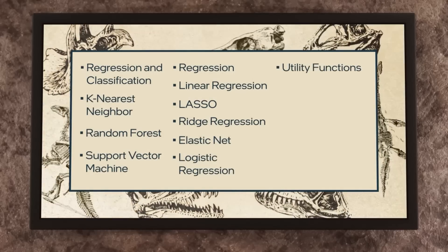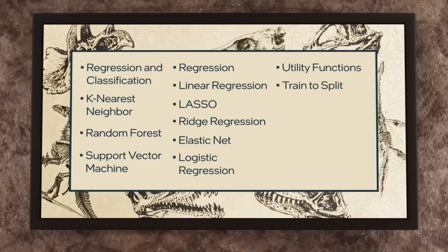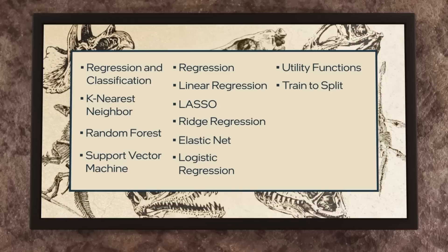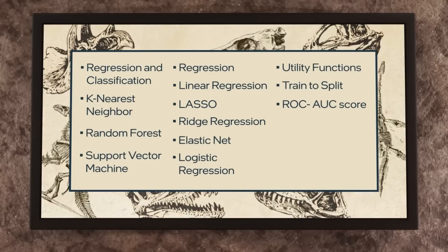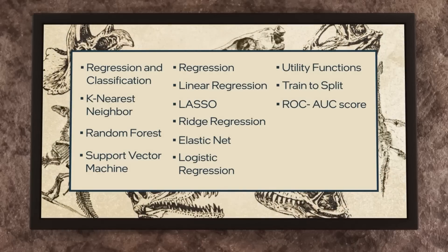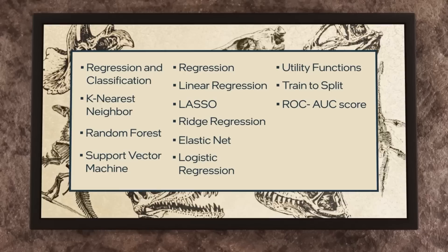We have utility functions such as train-test split and the receiver operator characteristics, or ROC AUC score, which is a commonly used machine learning scoring algorithm.